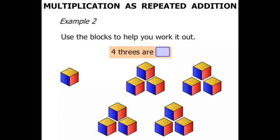Now 4 3's are something. Well let's count them one by one: 1, 2, 3, 4, 5, 6, 7, 8, 9, 10, 11, 12. We can say that 4 3's are 12.